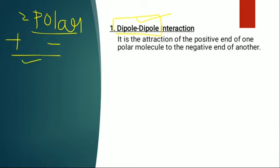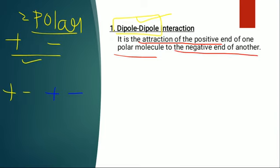So this is one set of the dipole, and here is another set of the dipole — plus sign, minus sign. It is the attraction of the positive end of one polar molecule to the negative end of another polar molecule.